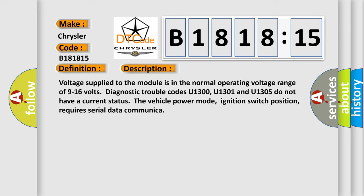And now this is a short description of this DTC code. Voltage supplied to the module is in the normal operating voltage range of 9 to 16 volts. Diagnostic trouble codes U1300, U1301 and U1305 do not have a current status. The vehicle power mode, ignition switch position, requires serial data communication.